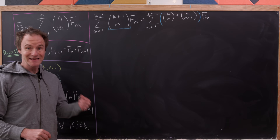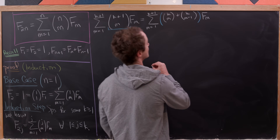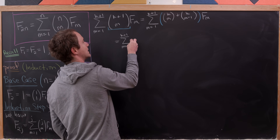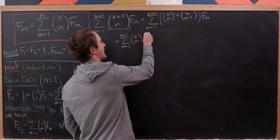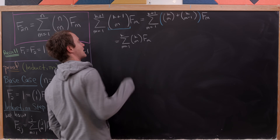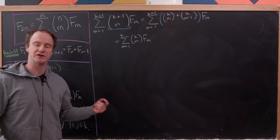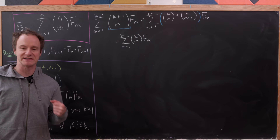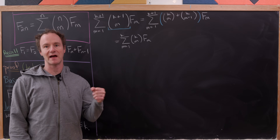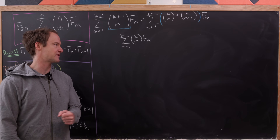Now I'll split this into two sums. The first sum will be the sum as m goes from 1 to k of k choose m times f sub m. I'm replacing k+1 with k in the upper limit because k choose k+1 equals 0 — you can't have a k+1-element subset of a k-element set.